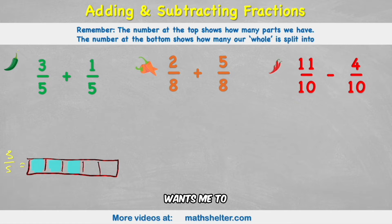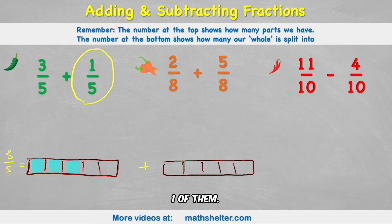But my question wants me to add this to 1 fifth. So 1 fifth is like saying I have another chocolate bar that's also split into 5, just like this. Nice equal parts. And I have 1 of them. So when I'm adding my 1, 2, 3 fifths to my 1 fifth, what am I going to get?